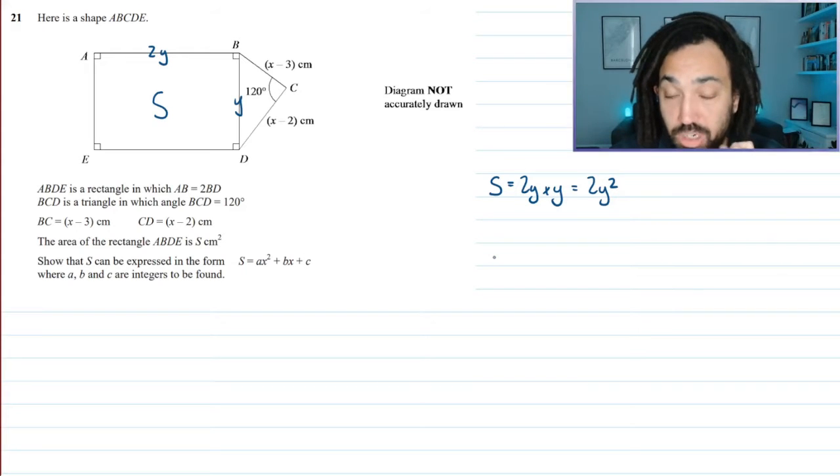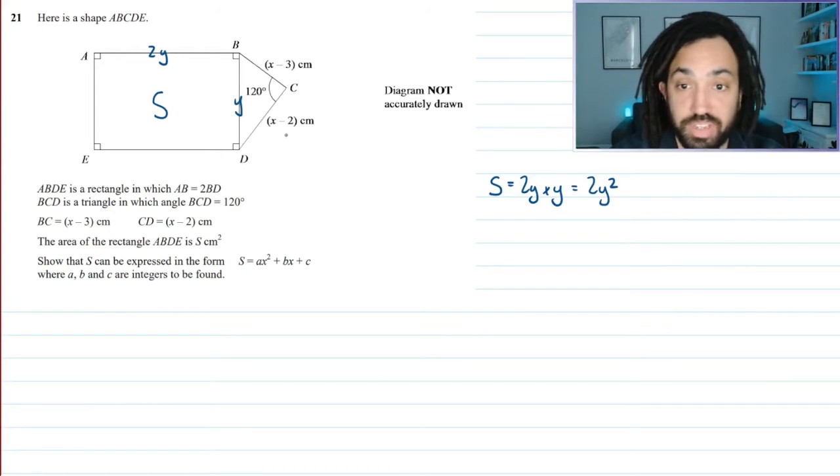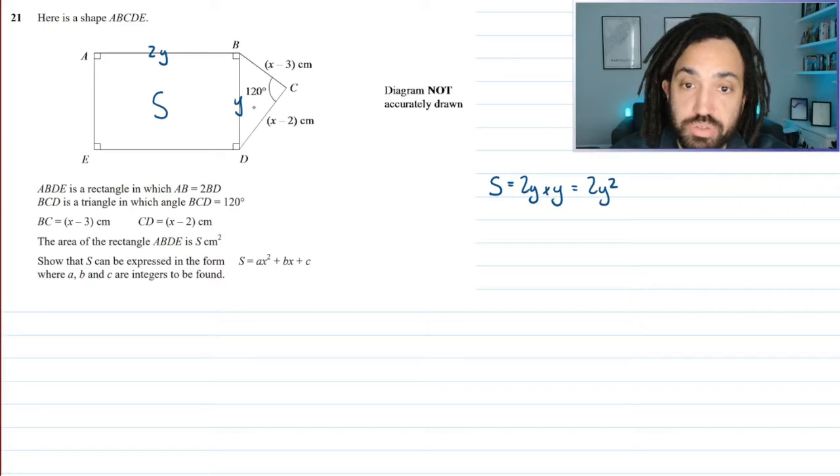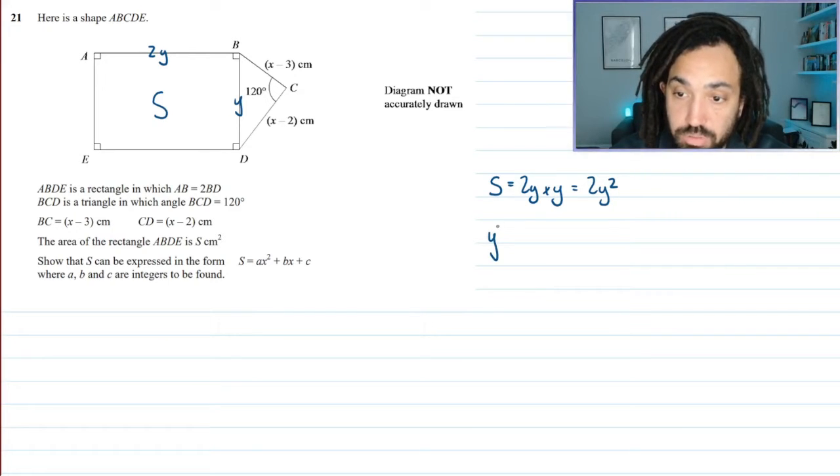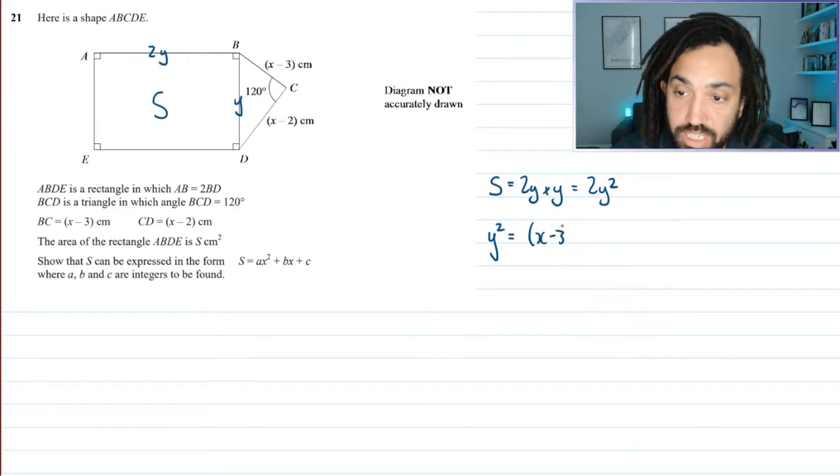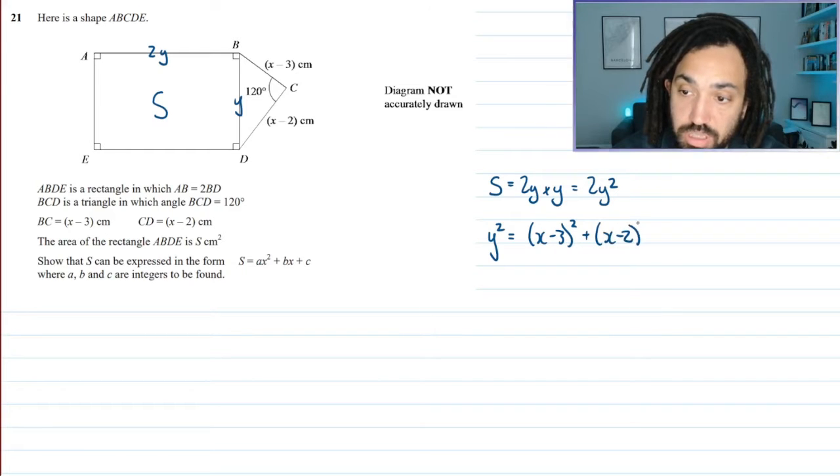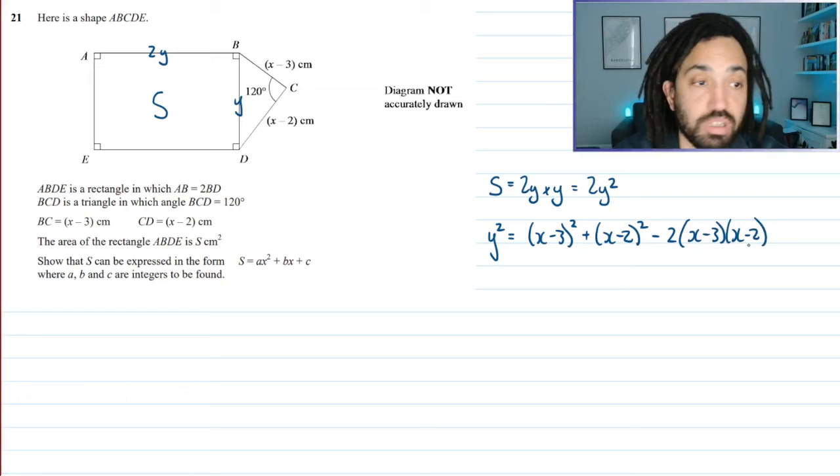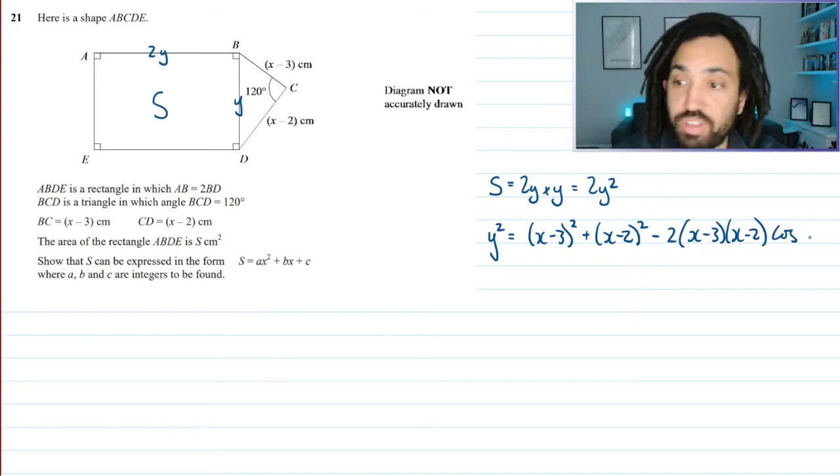Okay, that's helpful. But what I'll need to do is I'll need to express Y in terms of X, so that I can express S in terms of X. And I can express Y using the cosine rule. So the cosine rule states that the side which is opposite the angle, in this case, is the Y squared, is equal to the two sides adjacent to the angle, which are X minus 3 squared and X minus 2 squared, minus 2 lots of those sides multiplied together, multiplied by cosine of the angle, which is 120.